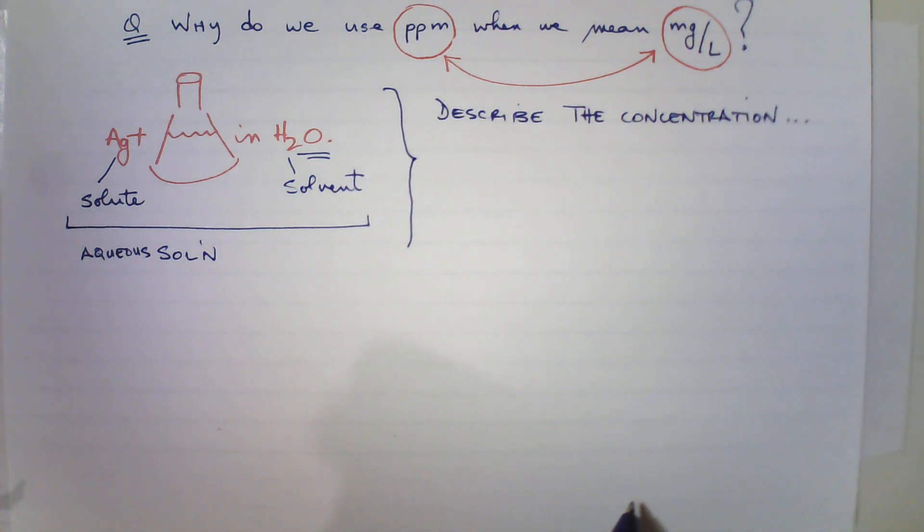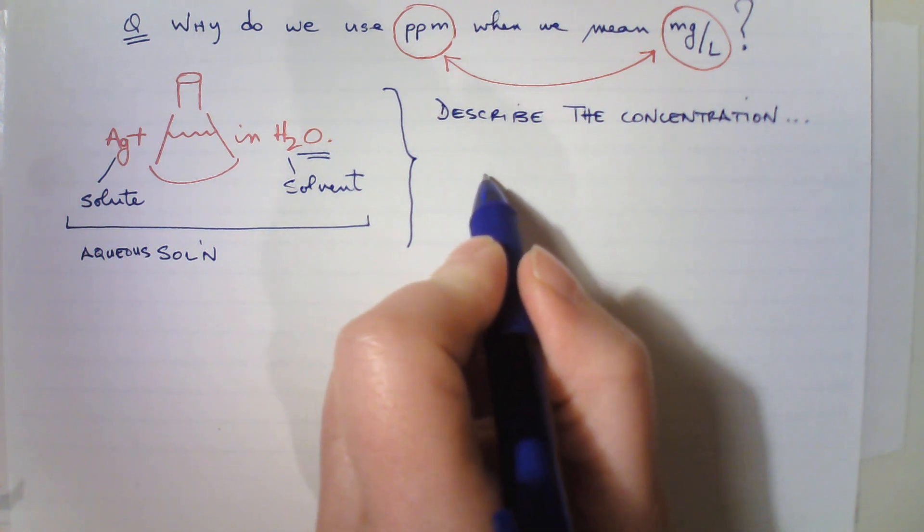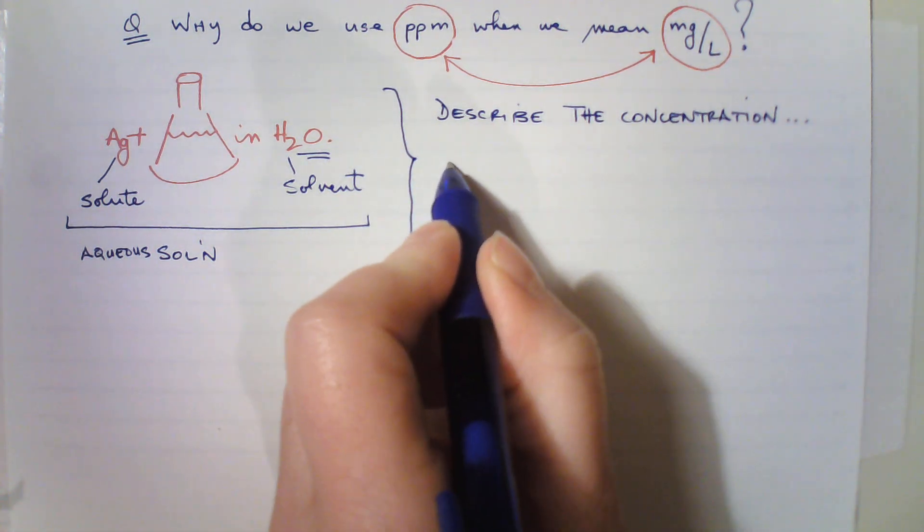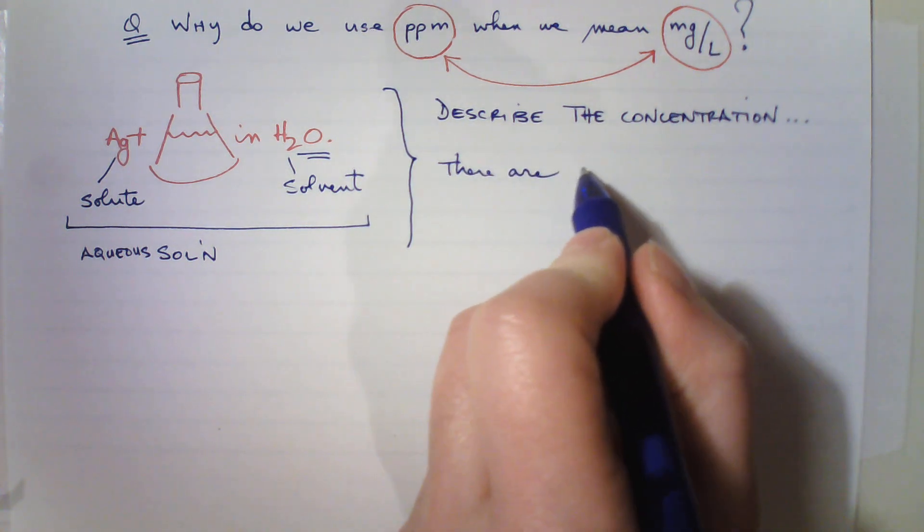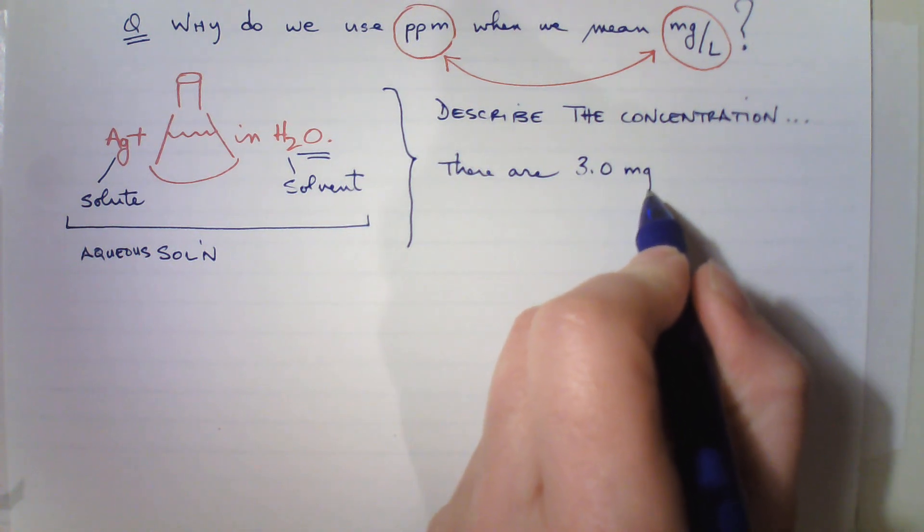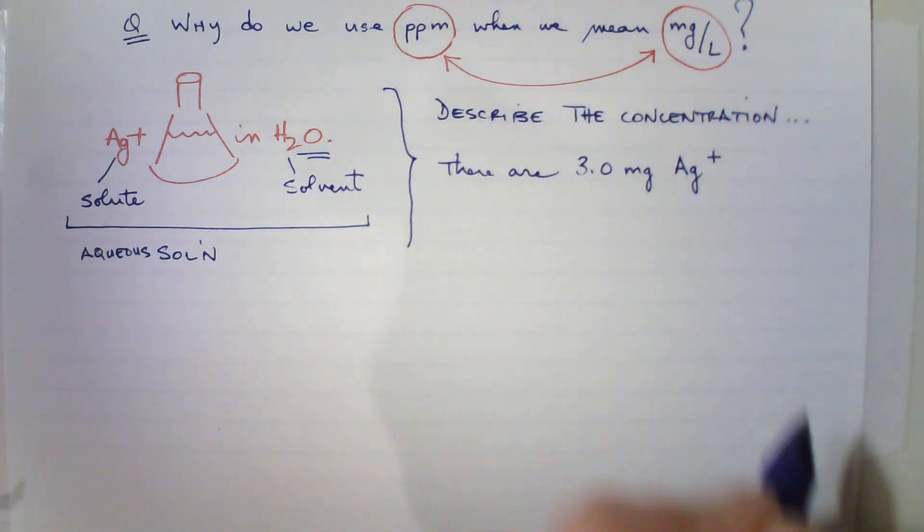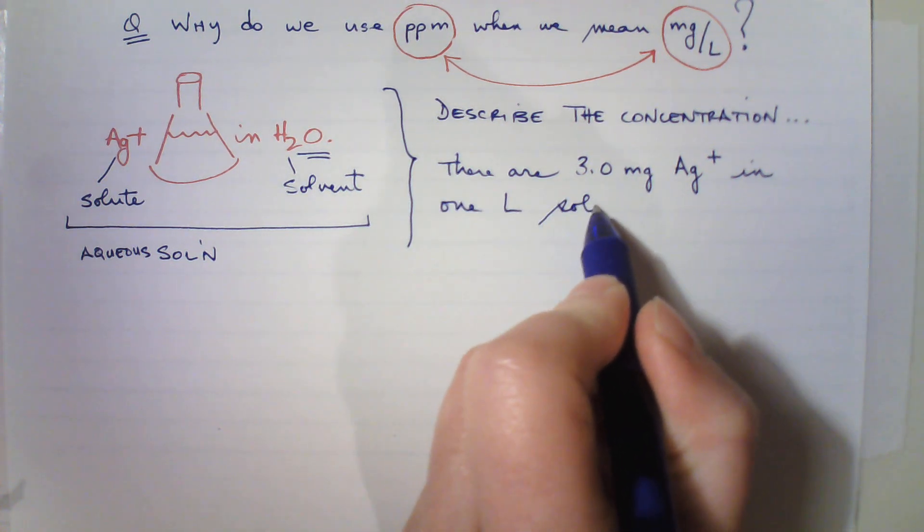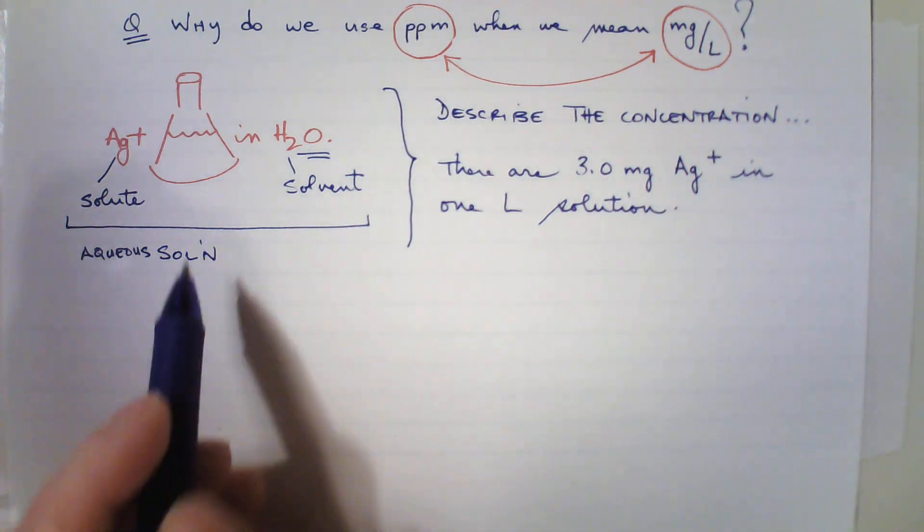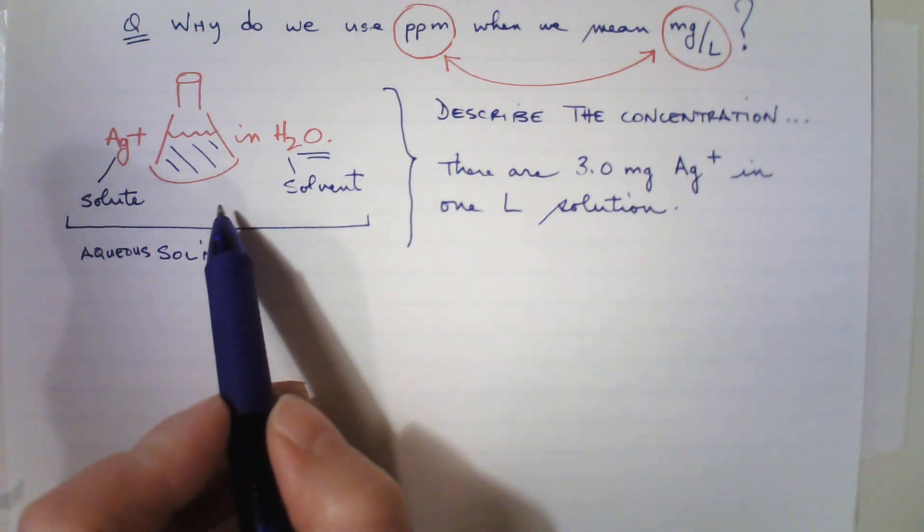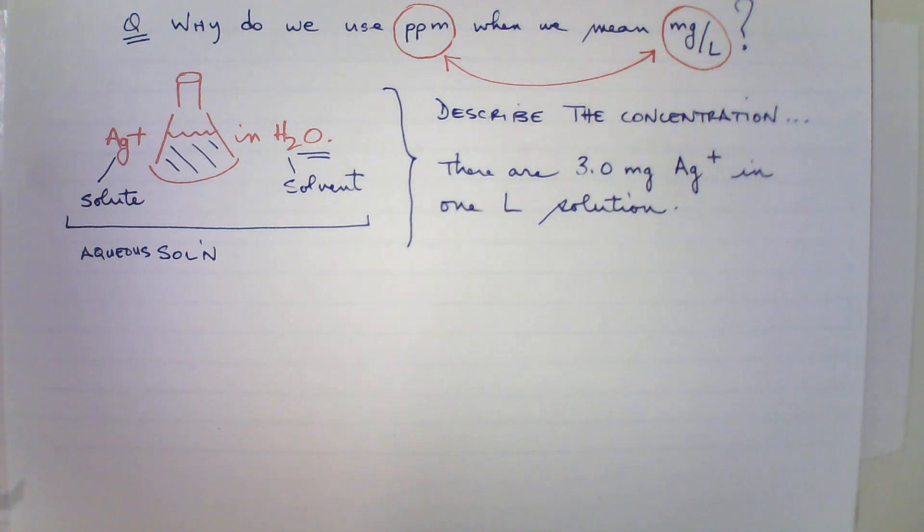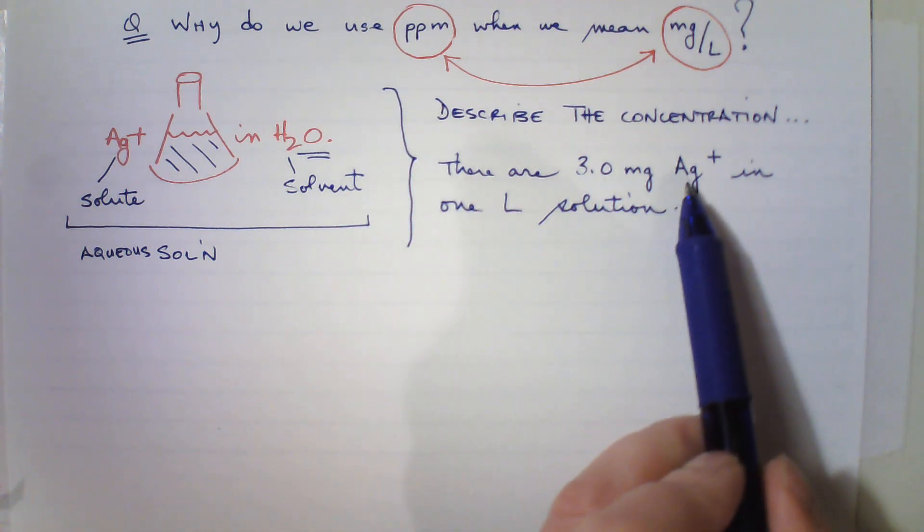The way I do that is to say how many milligrams of silver. Let's give it a value because this is just an example. Let's say that there are 3.0 milligrams of this silver, which exists as an ion in this case, in one liter of solution. That's a ratio. This may not be one liter.